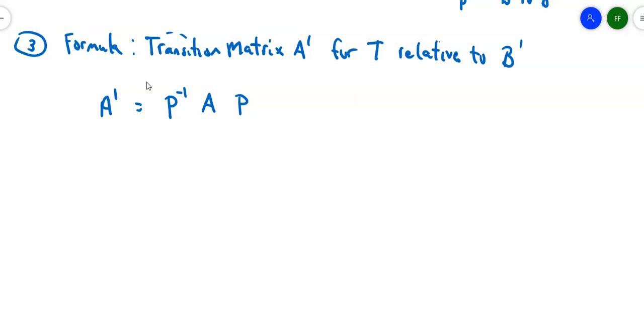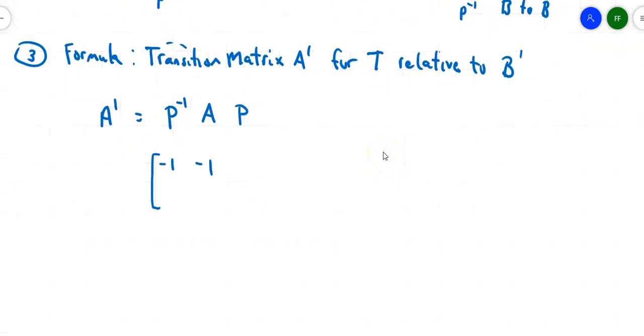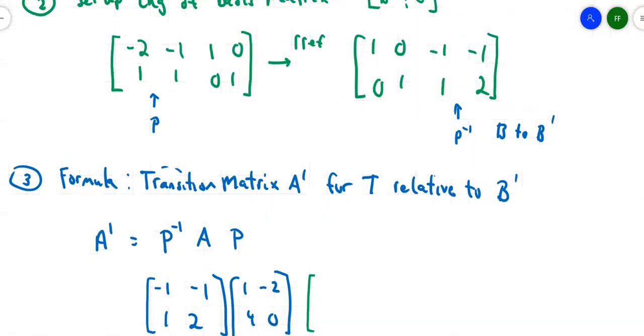The formula goes like this: matrix A' equals P inverse times A times P. I have all those matrices already. P inverse is the one that was on the top here, the (-1, -1, 1, 2). Matrix A was the original matrix for the problem, (1, -2, 4, 0). And then matrix P is the one that was on the left side in the previous step, that (-2, -1, 1, 1). Multiply those three things together, and I'll get A'.